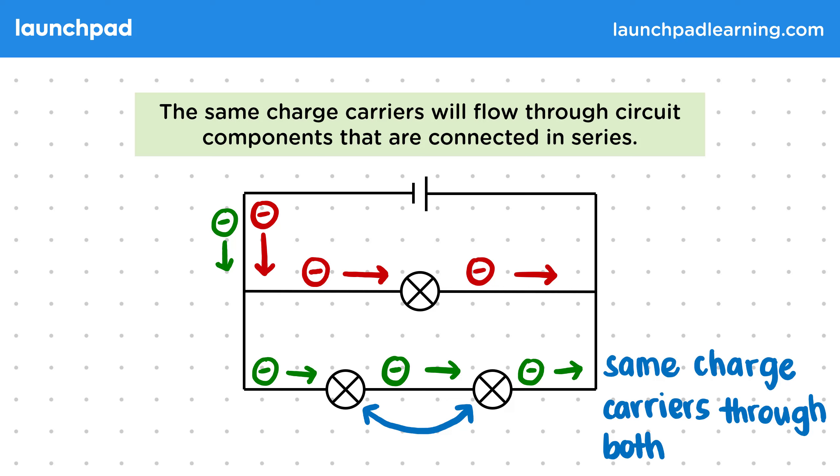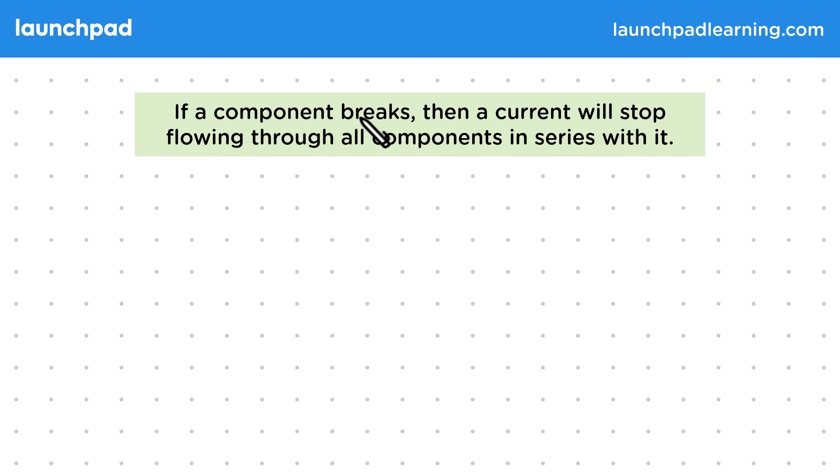But what's a problem that arises when we connect components in series? Well if a component breaks then a current will stop flowing through all components in series with it. Remember there has to be a complete loop in a circuit in order for a current to flow.